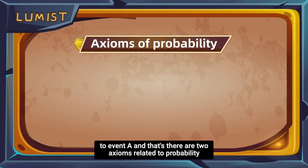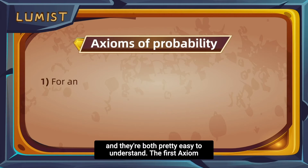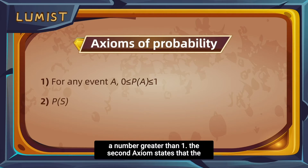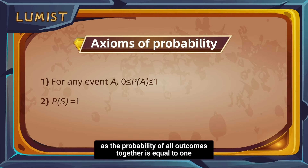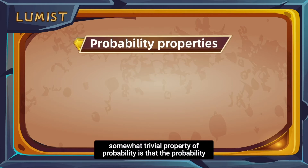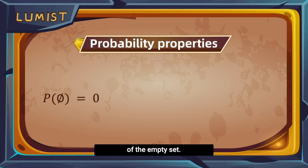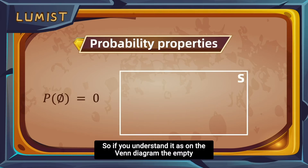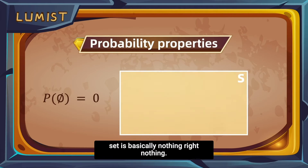There are two axioms related to probability, and they're both easy to understand. The first axiom states that the probability of any event must be a number between 0 and 1 — it cannot be negative or greater than 1. The second axiom states that the probability of the sample space, meaning all outcomes together, is equal to 1, or 100%. Additionally, the probability of the empty set — the probability of nothing — is equal to 0, since the empty set has no area on the Venn diagram.